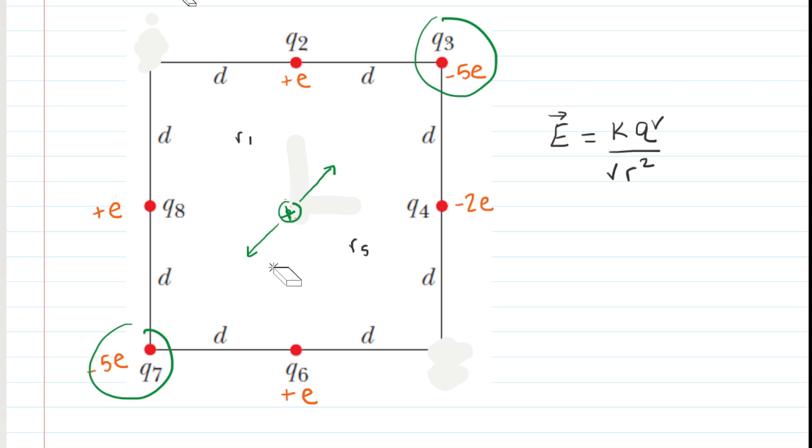So the electric fields are in completely opposite directions. They are produced by equal amounts of charge, equidistant from the center. Therefore they too cancel out. So let's get rid of Q3 and Q7.